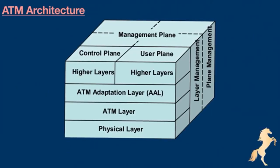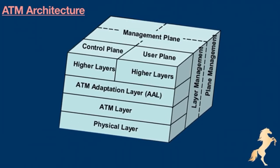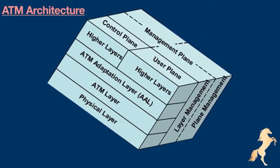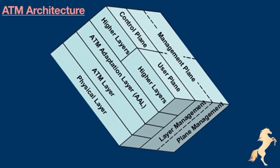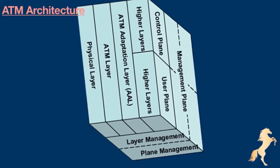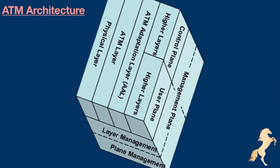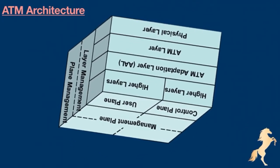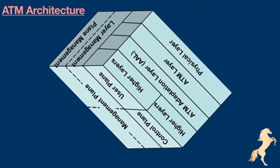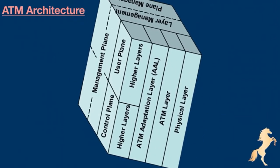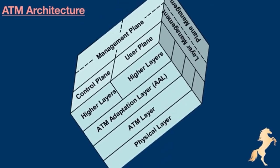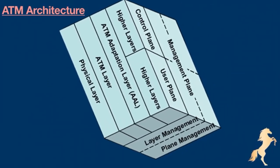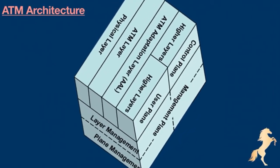This is ATM protocol architecture. Control plane generates and manages signaling requests. It sets up, monitors, and removes connections by using signaling protocols. User plane manages data transmission. Management plane is divided into layer management and plane management. Layer management is responsible for management of every layer in each plane. Plane management is responsible for system management and communications between different planes. Physical layer, similar to the physical layer of OSI model, manages the transmission related to the medium.